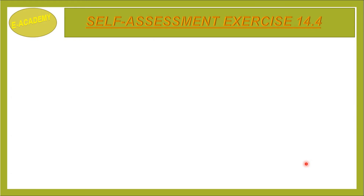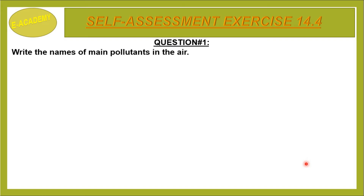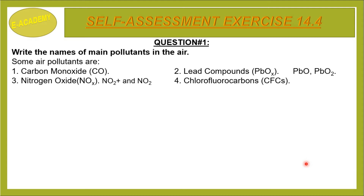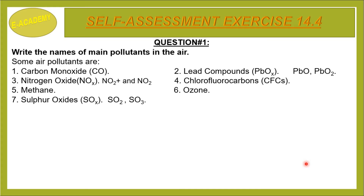Self Assessment Exercise 14.4, Question Number 1: Write the names of main pollutants in the air. Some air pollutants are carbon monoxide, lead compounds, nitrogen oxides (NO, NO2), chlorofluorocarbons, methane, ozone, sulfur oxides (SO2, SO3).